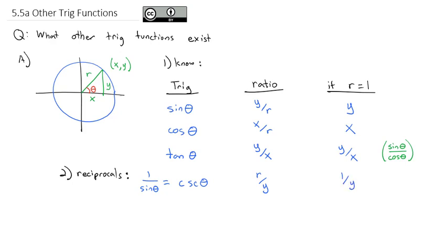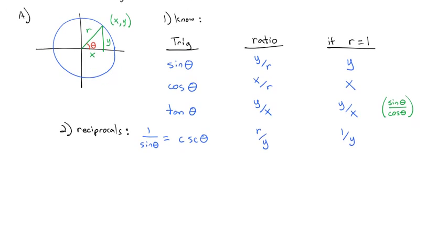The reciprocal of sine is cosecant. We also have the reciprocal of cosine: 1 over the cosine of theta is what we call the secant of theta. Since it's the reciprocal of cosine, we flip the cosine ratio upside down — it's r over x, or if the radius is 1, it's 1 over x.